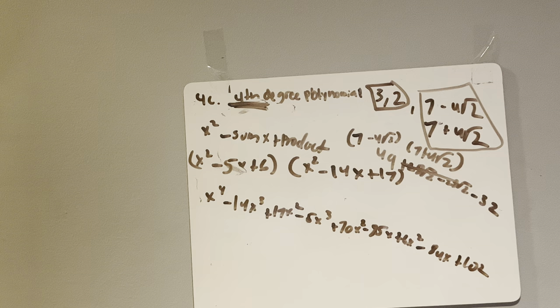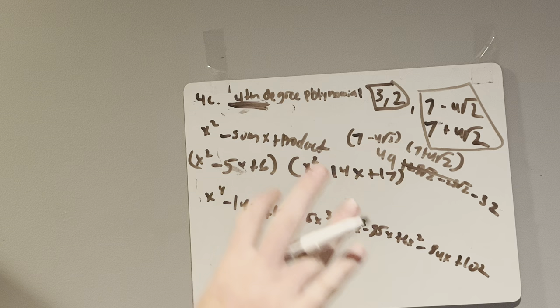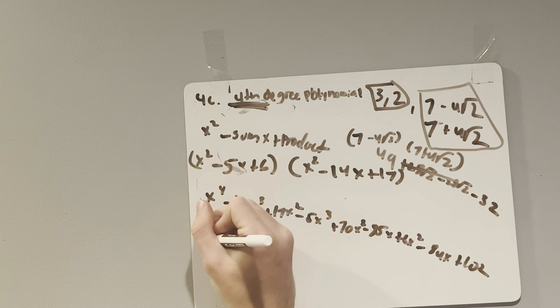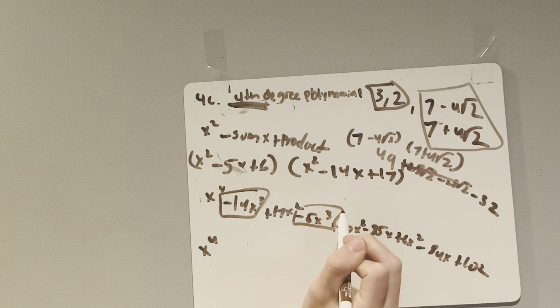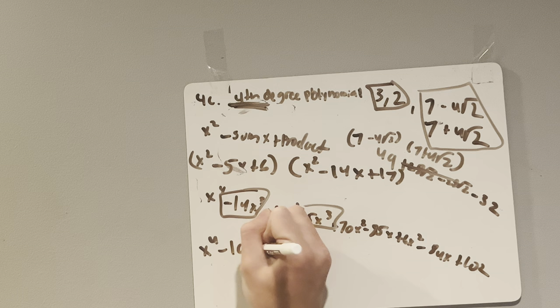So the final step of solving this problem is to combine like terms. x to the power of 4 remains the same. There's no more of that. x cubed, we have 1, 2, so 14 and negative 5. Negative 14, negative 5, that's negative 19x cubed.